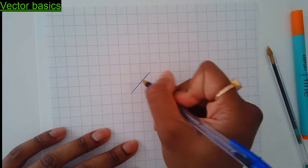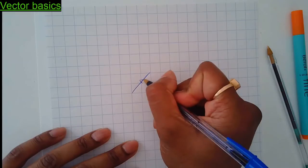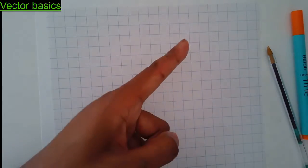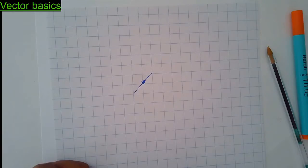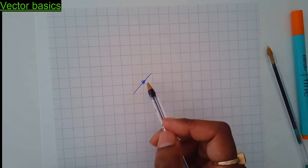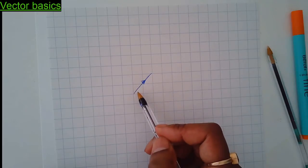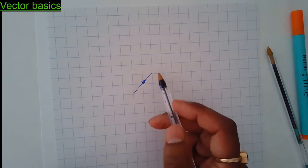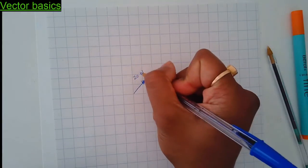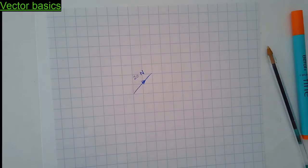For example, this arrow pointing in that direction could represent force — such as kicking a football in that direction with a force of 20 newtons. That's how you measure force.